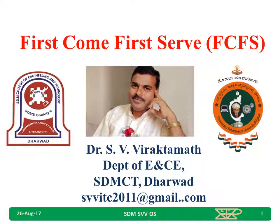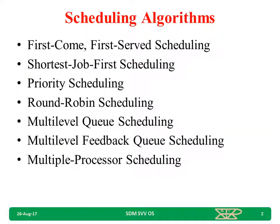Good morning. In this video, we will discuss the first come first serve scheduling algorithm. The different scheduling algorithms are: first come first serve, shortest job first, priority scheduling, round robin, multi-level queue, multi-level feedback queue scheduling — and sometimes we may have more than one processor, for which we also have scheduling.